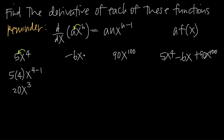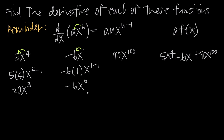Now we have negative 6x and we want to find the derivative. How do we use power rule if we don't have an exponent? We need to realize that x is actually x to the first power, so we can still use power rule. We bring the exponent 1 out in front to multiply by negative 6, getting negative 6 times 1, and then x to the 1 minus 1. Simplifying, we get negative 6x to the 0, and since 1 minus 1 is 0 and anything raised to the 0 is 1, we get negative 6 times 1.